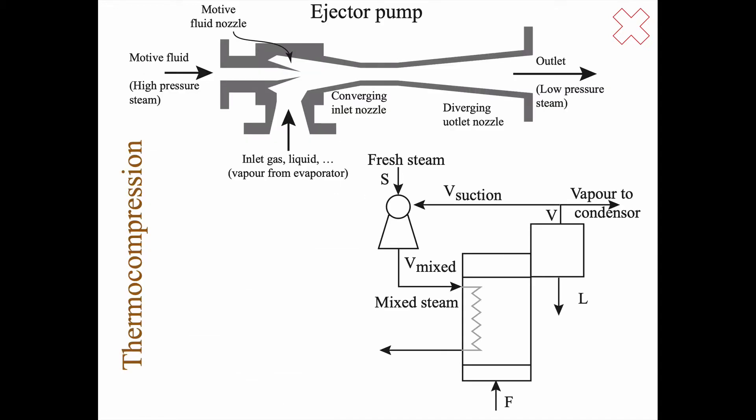The other way is to have thermocompression, a slightly similar setup. You still have the feed coming in and a vapor being produced, and then you have a split here. Some vapor goes to condenser to make sure that the pressure on the feed side is low, and then you have some fresh steam coming in into what is called an ejector pump.